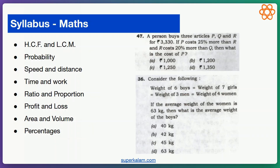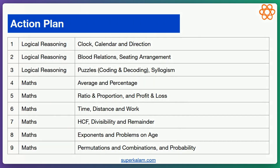So this is the syllabus — these are the topics from each of the buckets. Now let's look at our action plan. In this series, we will be having three lessons on logical reasoning. In each lesson, we will be solving previous year questions. The first lesson will be about clocks, calendars, and directions. The second will be about blood relations and seating arrangement. The third will be about puzzles and syllogism — syllogism being the statement and assumptions type of question. And six videos will be on maths.